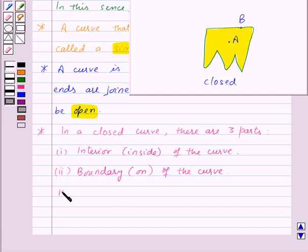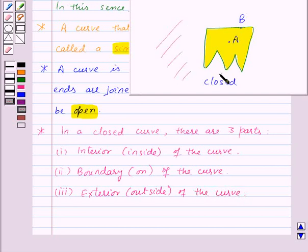And the third part is exterior or outside of the curve. So here this all part is the exterior part of this curve. So we can say that the point C is in the exterior of the curve.